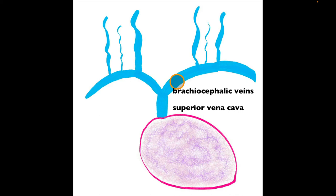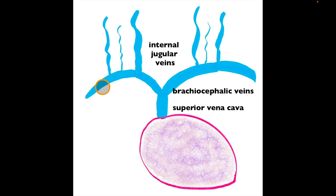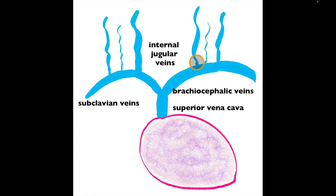There is a brachiocephalic artery — the first branch off the aortic arch — but there is only one brachiocephalic artery, whereas there are two brachiocephalic veins: the right and left. The right internal jugular vein and left internal jugular vein each merge with the right and left subclavian veins, respectively, to drop blood into the brachiocephalic veins.